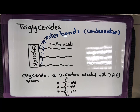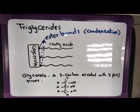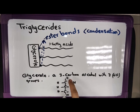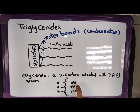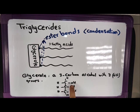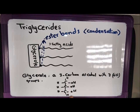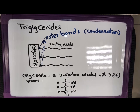This is the structure of one glycerol molecule, which has three carbons in its structure, along with hydrogen atoms and three hydroxyl groups (OH) at this side.